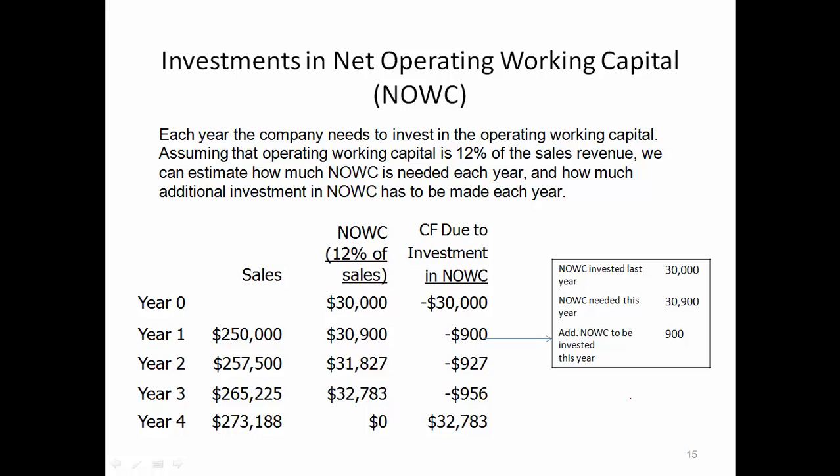If you look at the table here, at time zero, or say the beginning of the project, if we assume that NOWC is 12% of the sales revenue and sales revenue for year one is estimated to be $250,000, then $250,000 multiplied by 12%, we have $30,000. That's what we need in year zero, or say at the beginning of the year, as working capital to get the project started. And that's why we have to invest $30,000 — that's the negative sign — as an investment in NOWC.